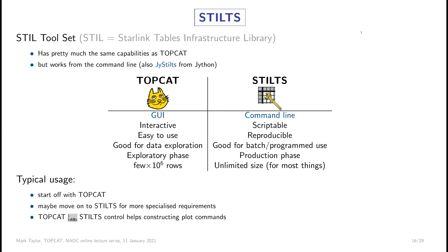Briefly, STILTS is a command-line program with all the same capabilities as TOPCAT, but scriptable. Where TOPCAT is graphical — point and click — STILTS lets you write commands at the shell, or possibly in Python. TOPCAT is very good for interactively exploring data, but if you have a table and know what you want to do with it, or you have a thousand identical tables to process, you can write a STILTS script that's reproducible and also works with somewhat larger datasets. It's documented in the same way.